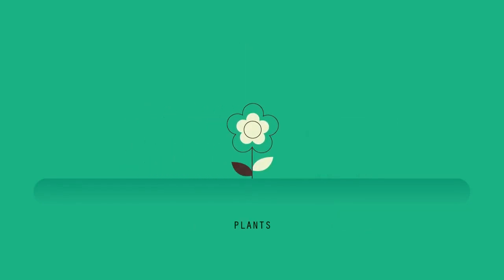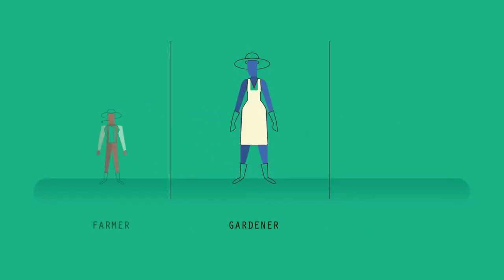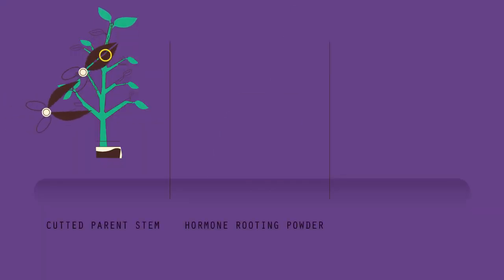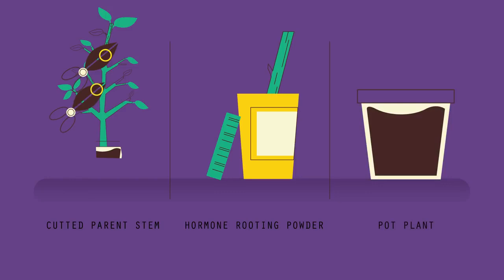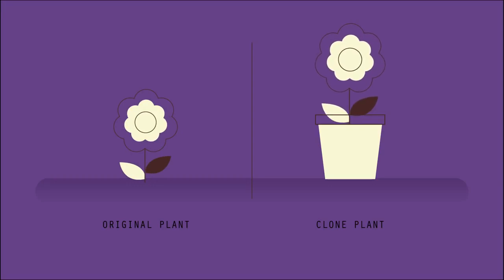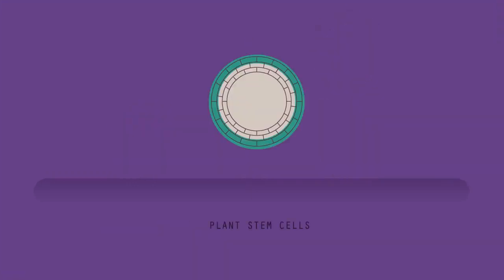Both plants and animals can be cloned. Let's start with plants. A gardener, farmer, or plant breeder might want to make many copies of a particular plant quickly. The easiest and cheapest way to do this is to take cuttings. Shoots are cut from the parent plant, then the end of each shoot is dipped in hormone rooting powder and placed into a pot of soil. The hormone rooting powder encourages the cutting to start growing roots, and soon a whole new plant will have grown, which is identical to the original plant.